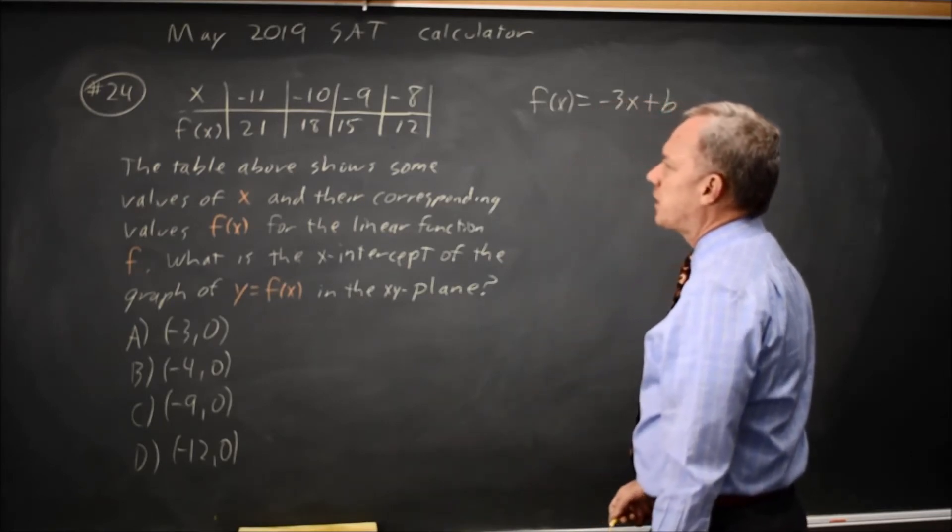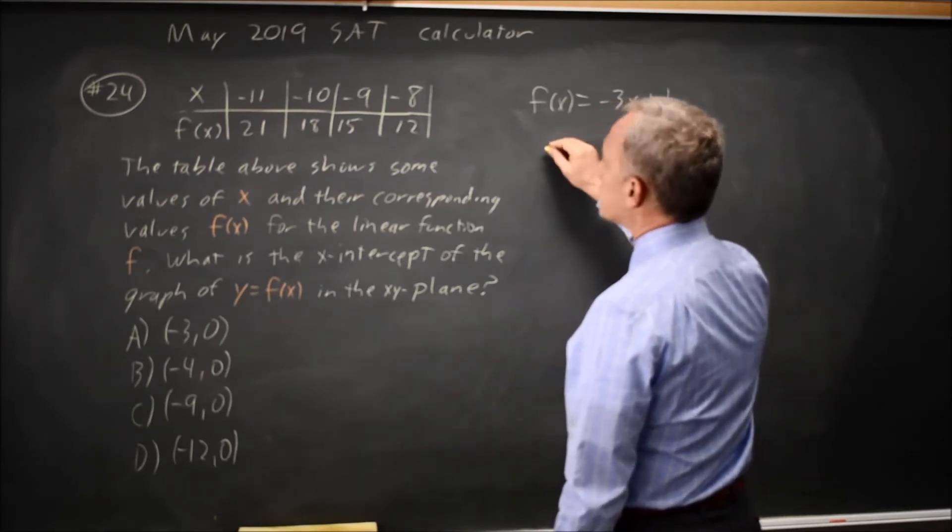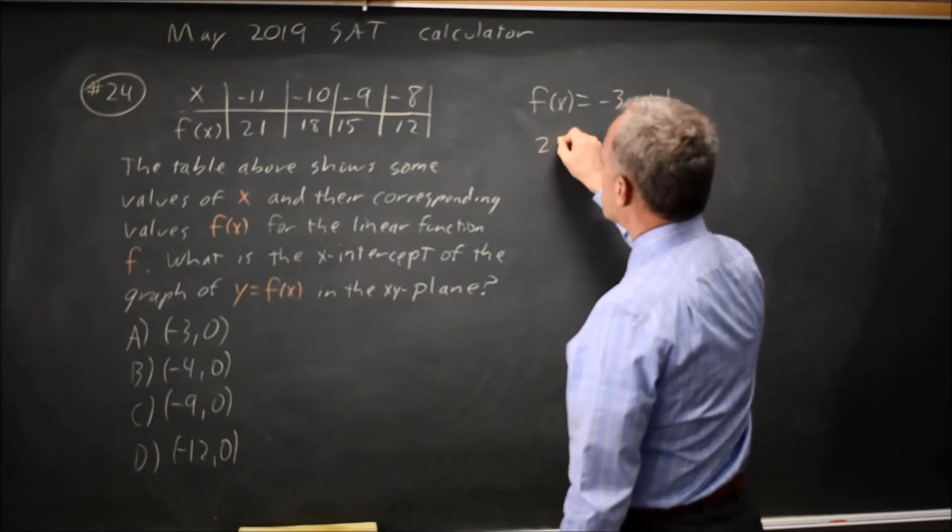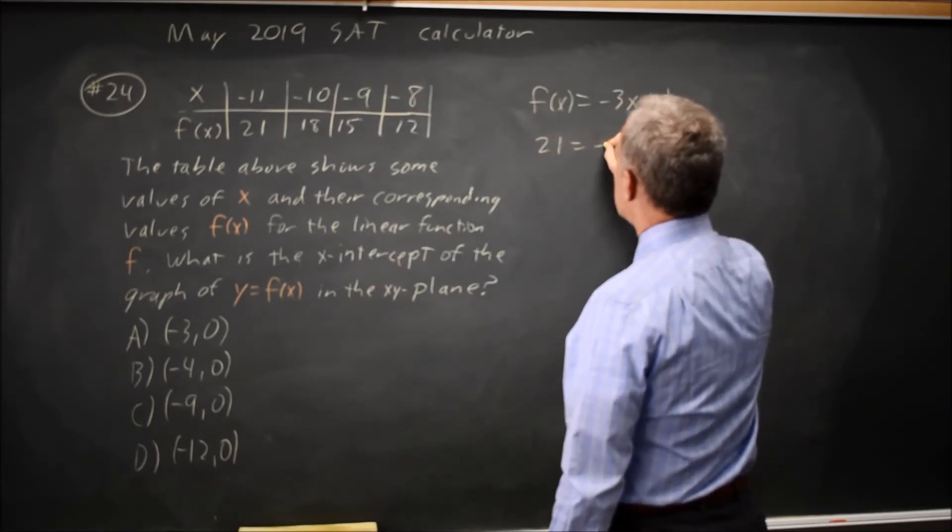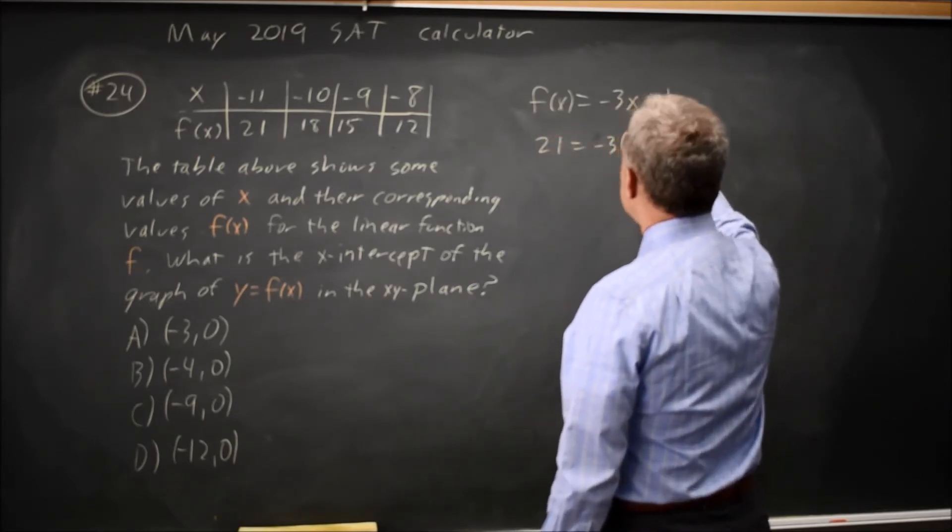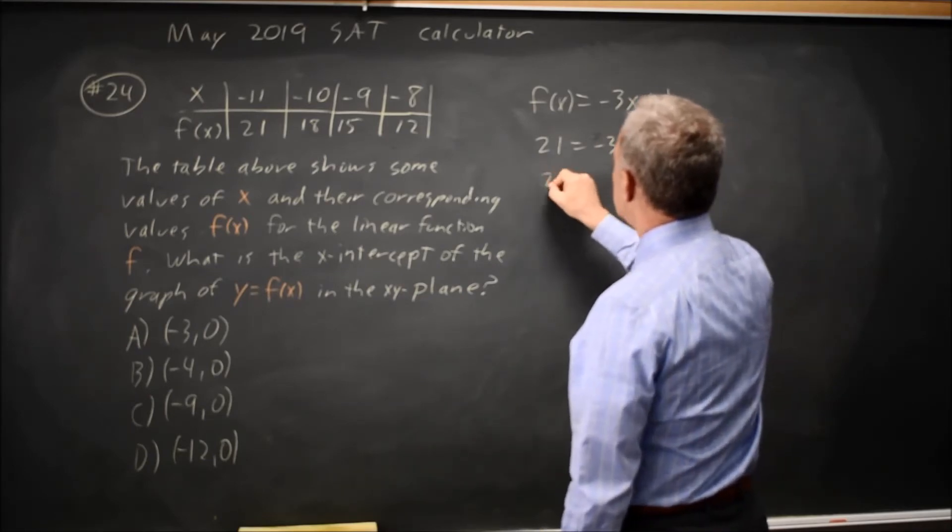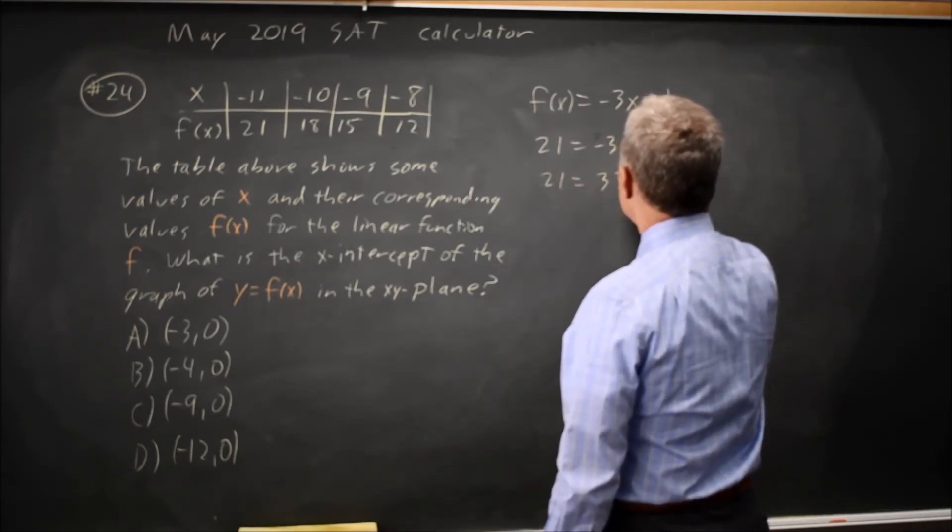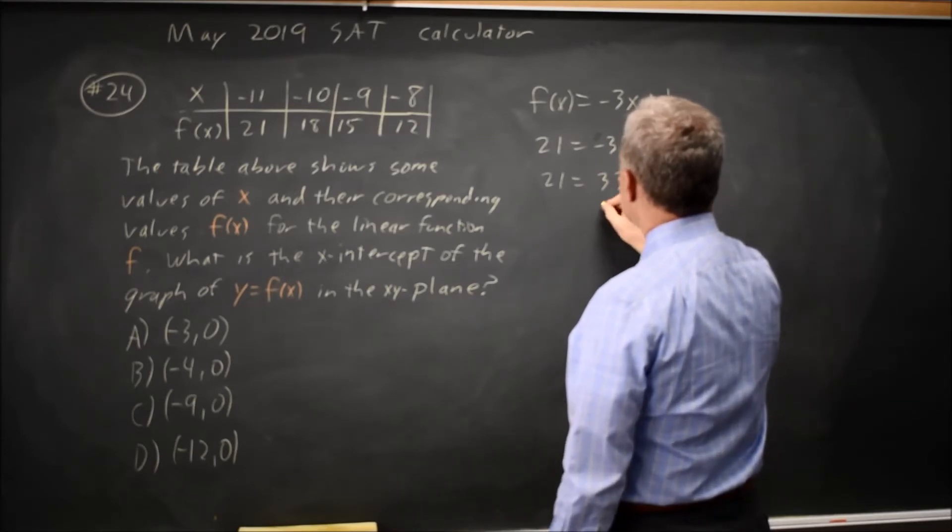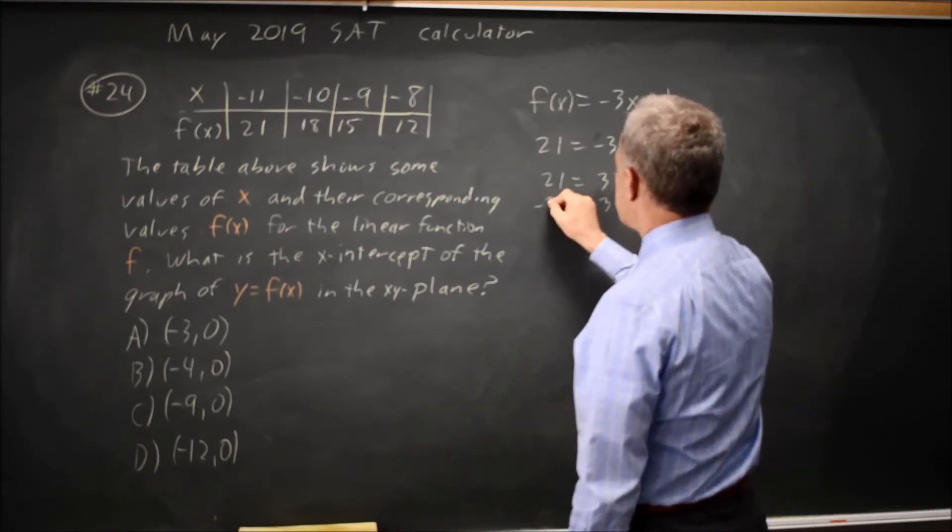I can substitute in any point. I'm going to go with the first point. f(x) is 21 when x is -11. So 21 = 33 + b. If I subtract 33 from both sides,